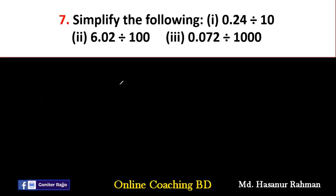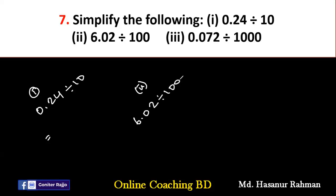Now, number seven says: simplify the following. Number one is 0.24 divided by 10, and number three is 0.072 divided by 1000. When we are doing multiplication, we move the point to the right side. But when we divide, we move the point to the left side.